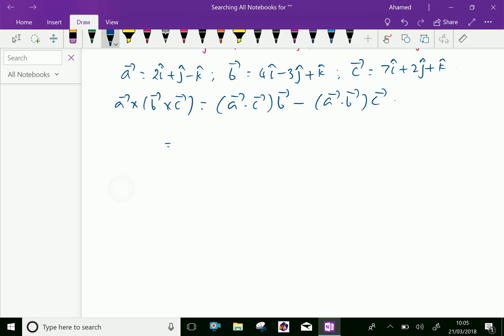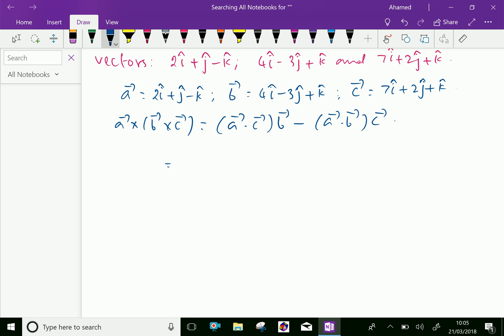Vector a dot vector c equals 2 into 7 plus 1 into 2 plus minus 1 into 1, multiplied with vector b, which is 4i minus 3j plus k.